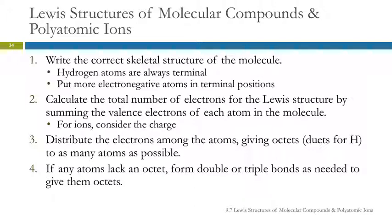So you have to figure out how many dots do I have to play with? And then you're going to start passing out the electrons, the dots. And you're going to try to give octets, or for hydrogen, a duet, to as many atoms as possible. And sometimes you can do that just fine with single bonds. If you can't make everybody happy, then we have to do some more sharing, and we have to make double or triple bonds as needed. But start out with single bonds.